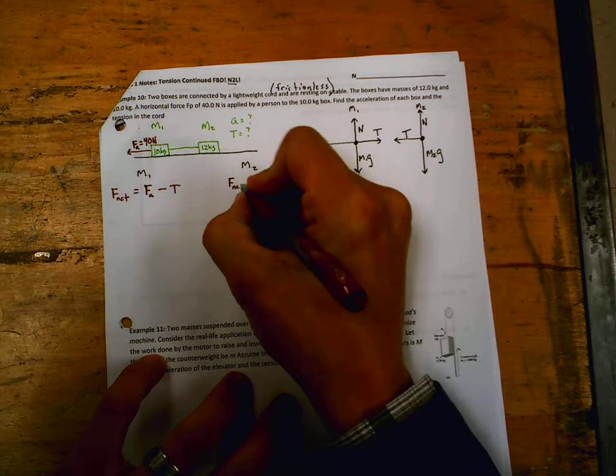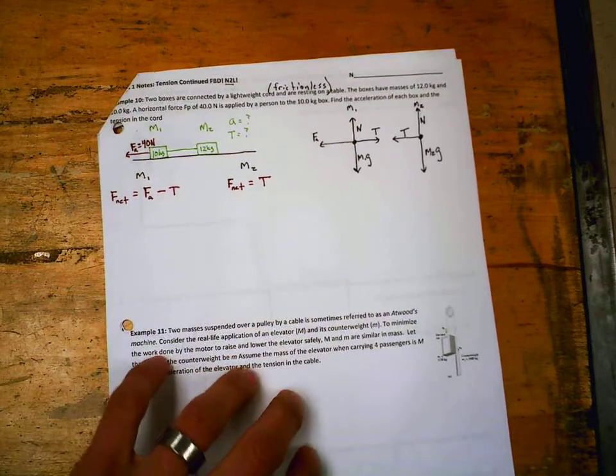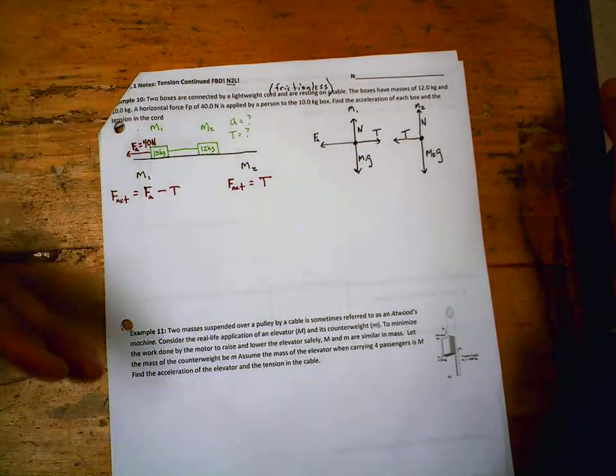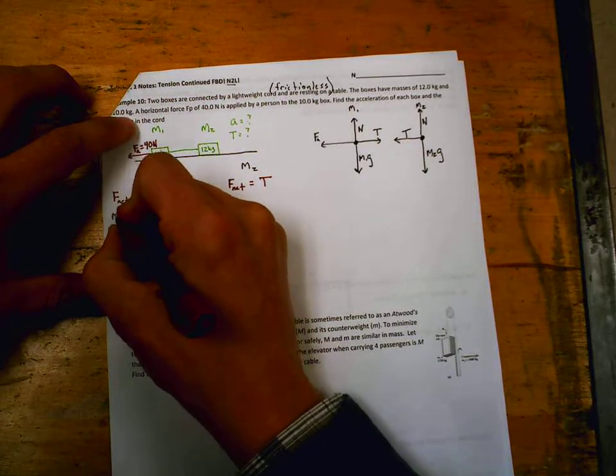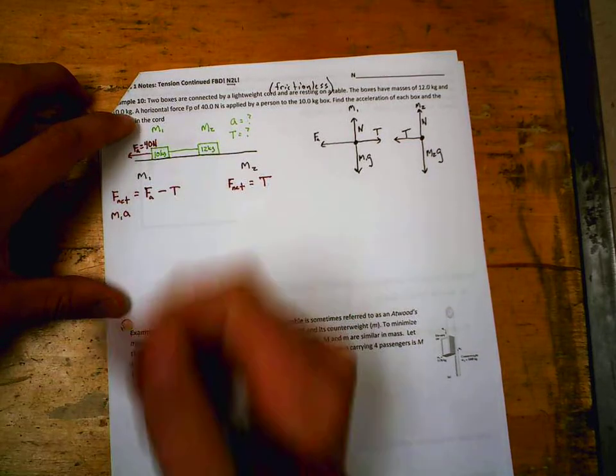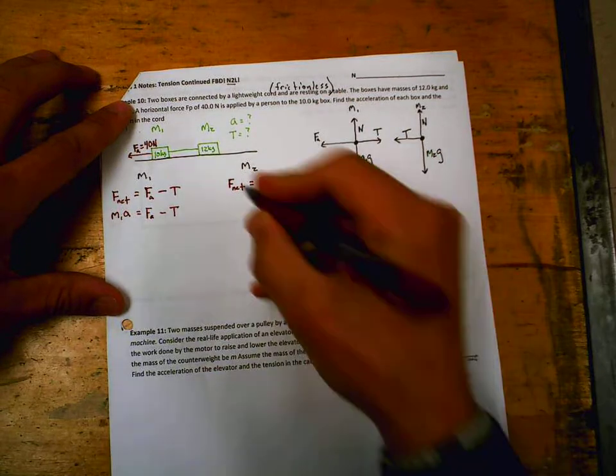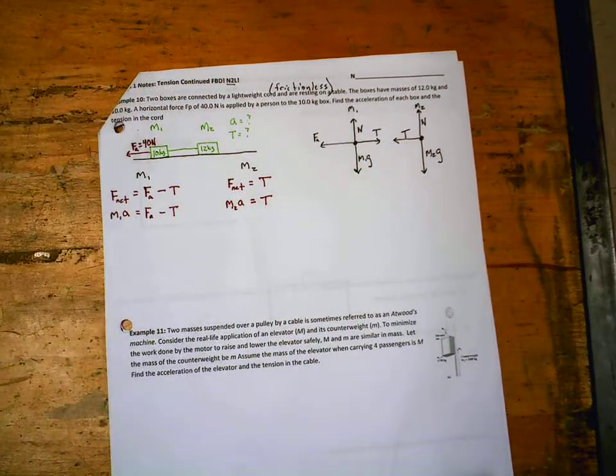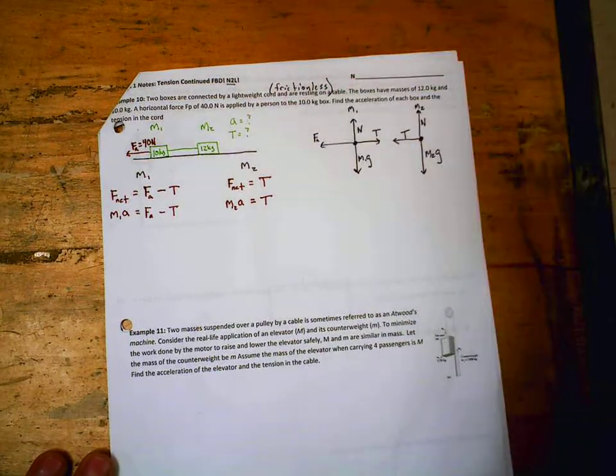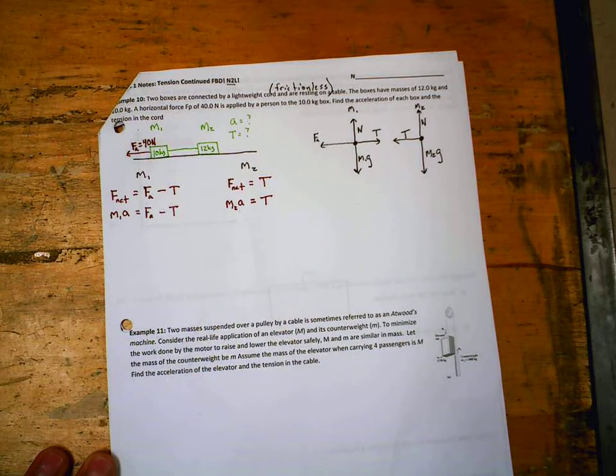M2 is going to be a very simple F net expression. F net is just equal to tension. And those are your N2L statements. Now we're going to go further and be a little bit more specific because we need acceleration as part of the deal here. So here I'm going to say F net is M1A because this is the F net just for mass 1. So M1A equals force applied minus tension. Now over here we got M2A equals just tension. And notice acceleration and tension are what we want to solve for. Can I use either of those equations to get it? Not really, because I got two unknowns in each equation.